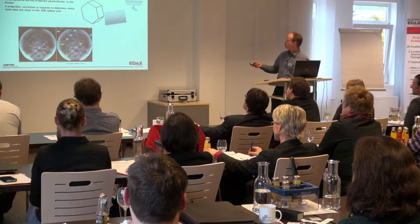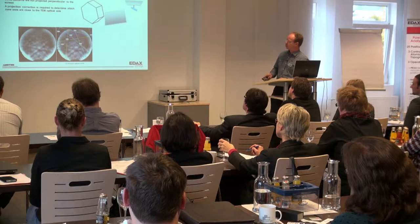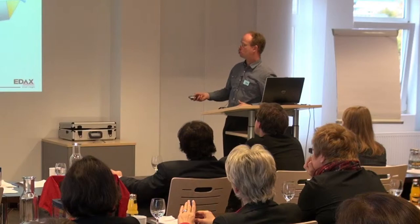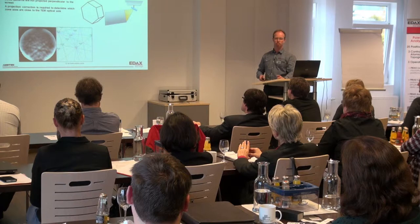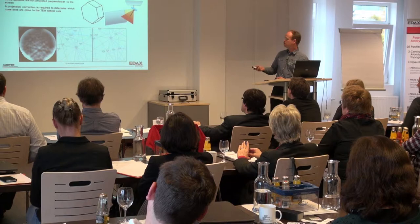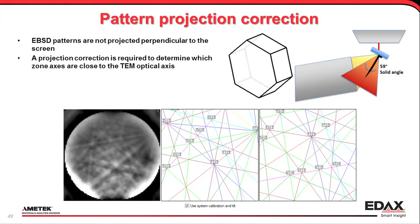One thing to keep in mind: there's my sample, here is one of the grains. I index that — not a problem. But this is projected sideways. When I put my sample in the TEM, I'm projecting straight down. So the zones that I see here are not the zones that I'm seeing in the TEM. There's a little check box in the simulation in the software: 'Use system calibration and tilt.' If I disable that, I'm getting the simulation of the pattern that would be perpendicular to the sample surface — so this is the pattern with the zones that I would get visible in transmission mode in the TEM. But of course this is about 55-59 degree solid angle, and in the TEM I get much less than that.